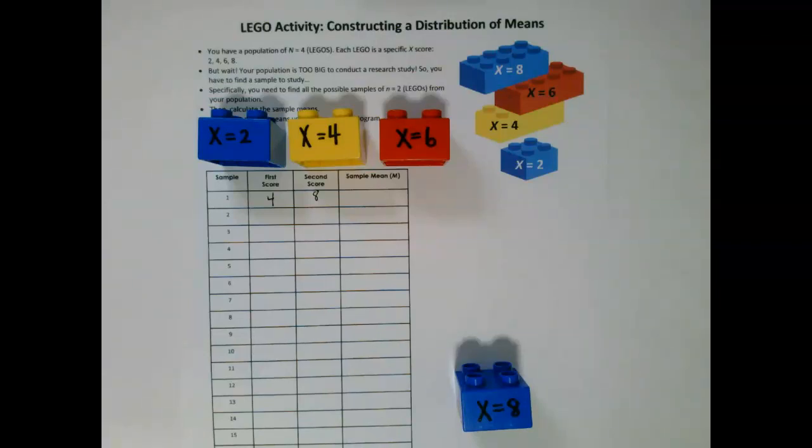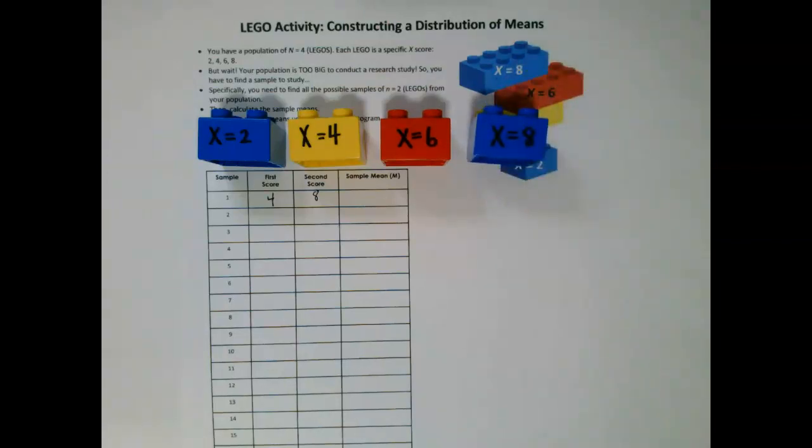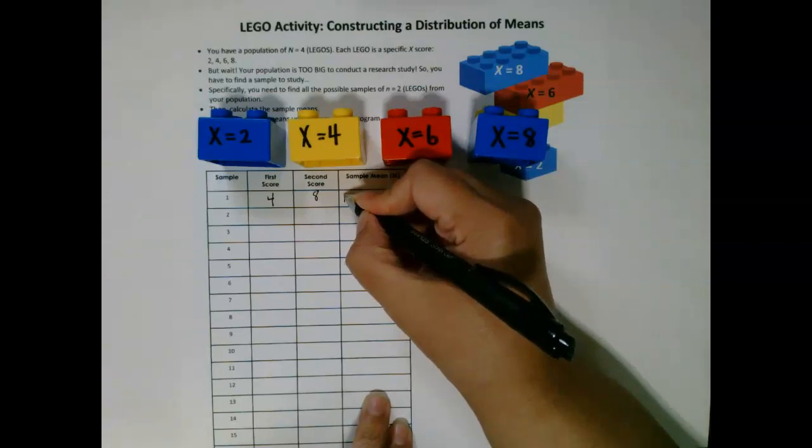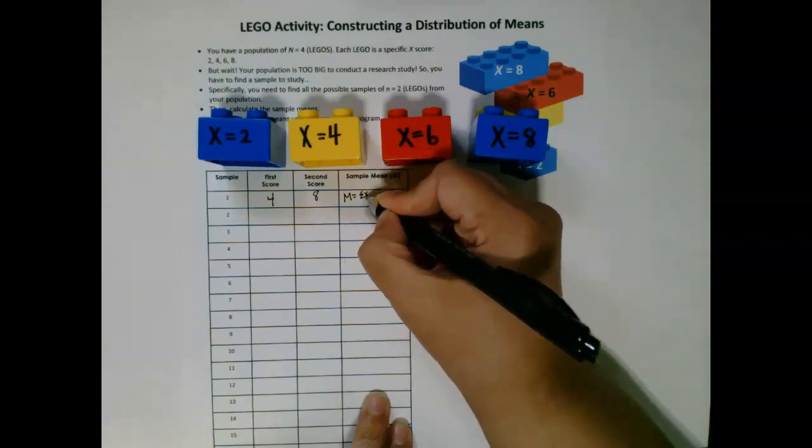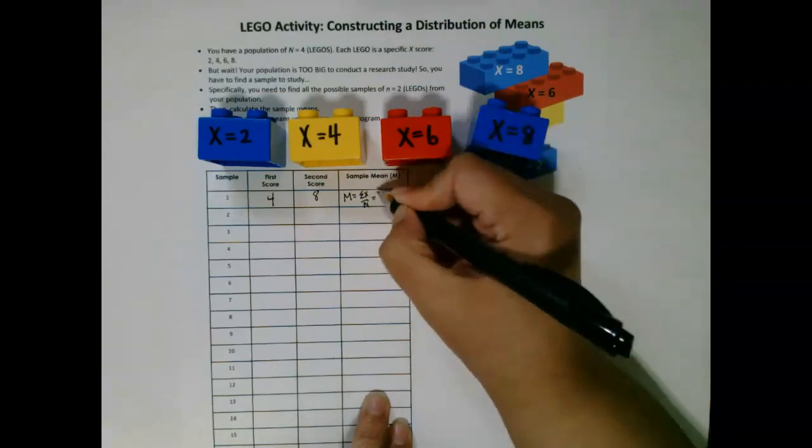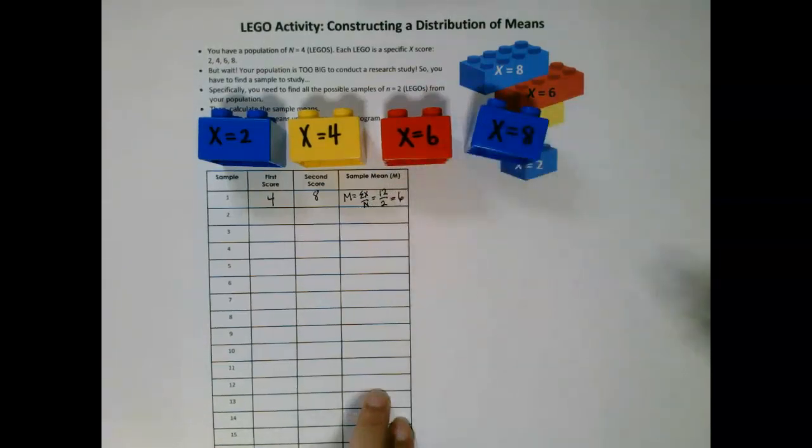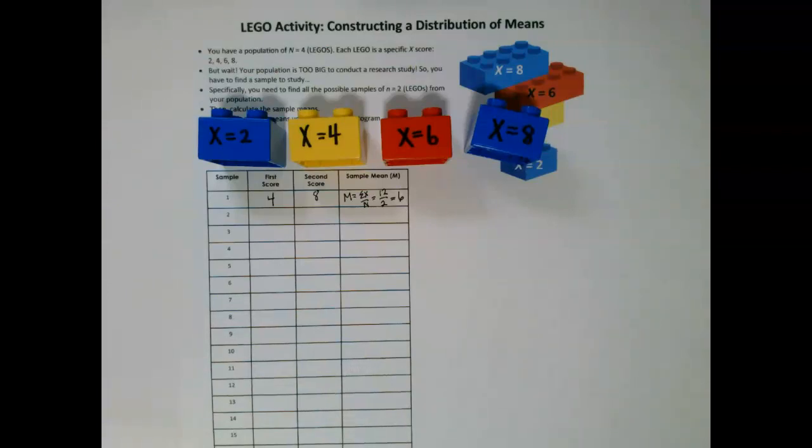Now that you have a sample of n equals 2 scores, you'll calculate the sample mean. So 4 plus 8, your mean is the sum of X over n, and 4 plus 8 is 12, and 12 divided by 2 is 6. So that would be your first sample mean. Phew! That was just the first sample mean.